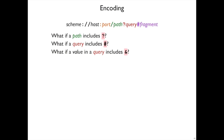For some URLs, we have to worry about encoding issues. For example, if you want to use a path where the path you want to send to the server involves a question mark, or if you have a query where either the key or the value associated with it has a hash mark or an ampersand, then you have to encode those parts to get them through.